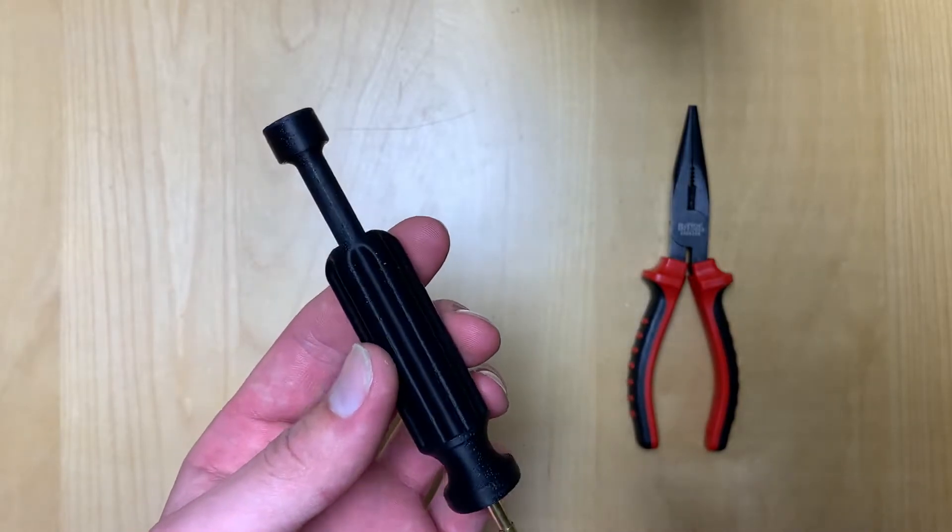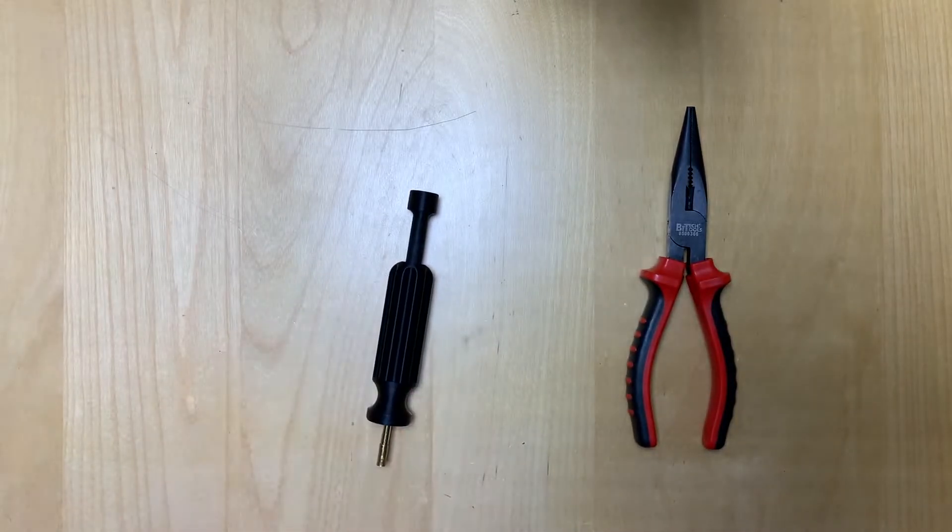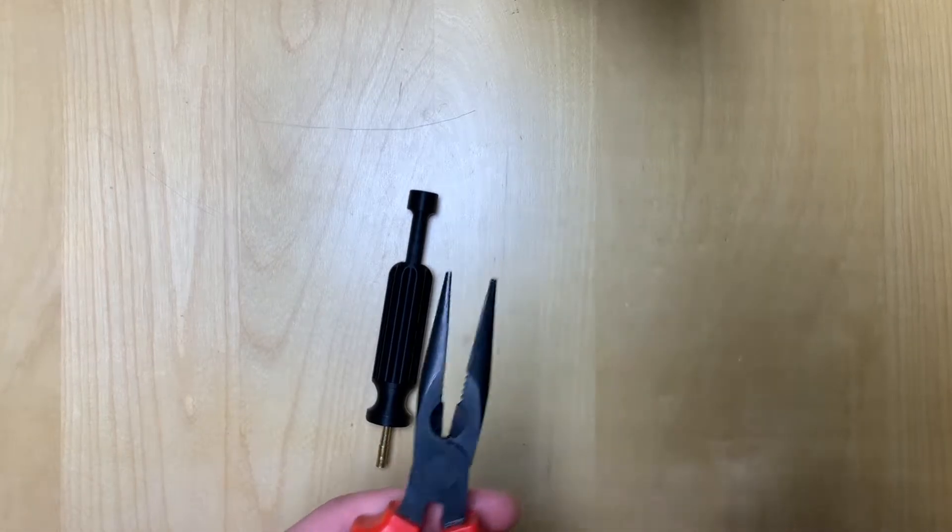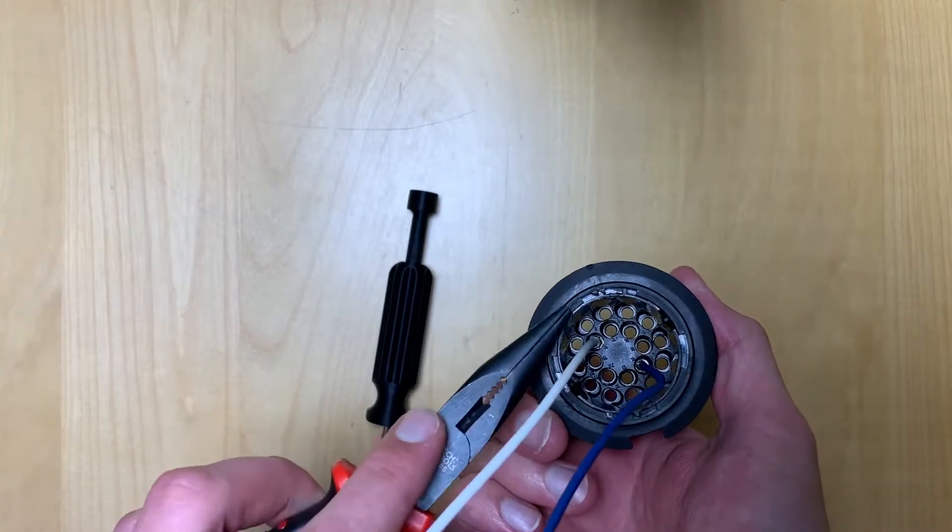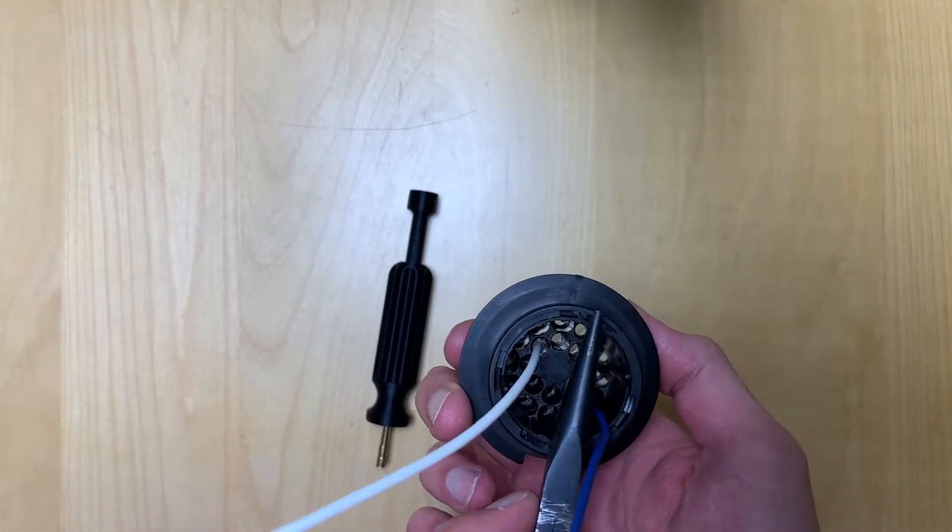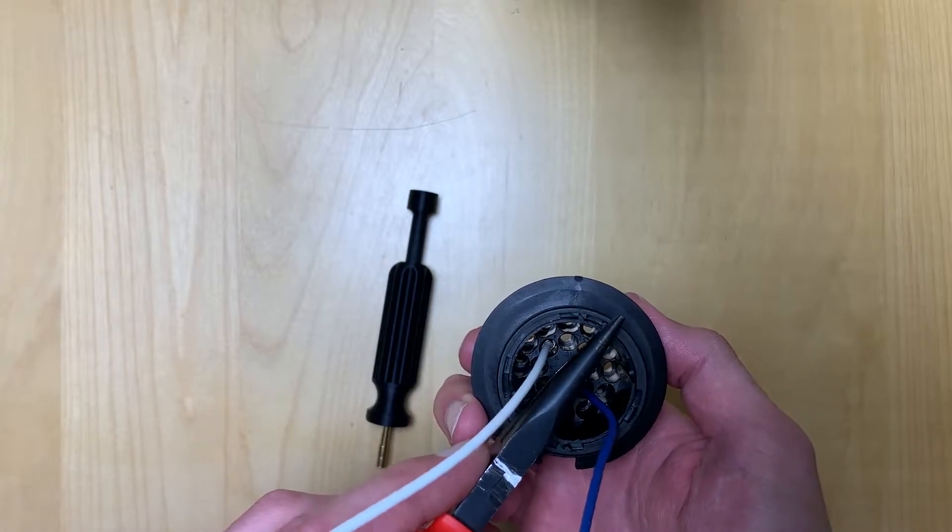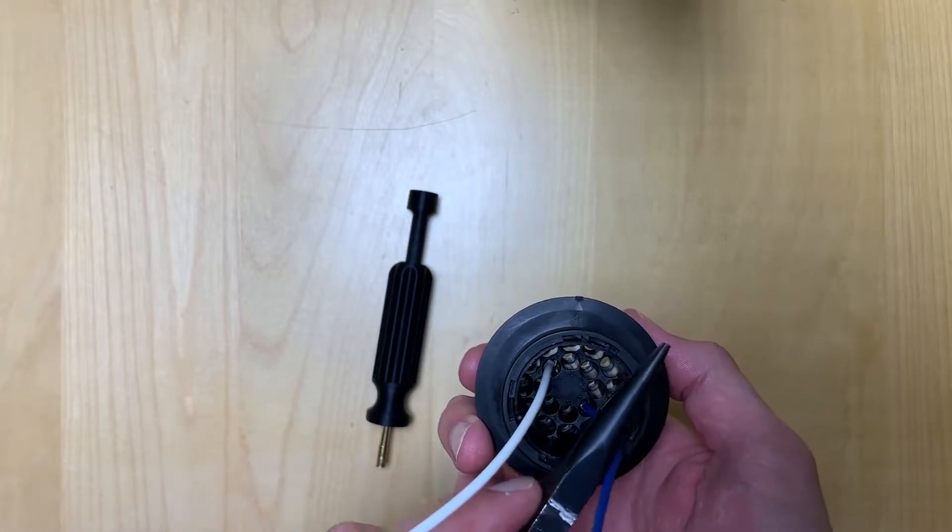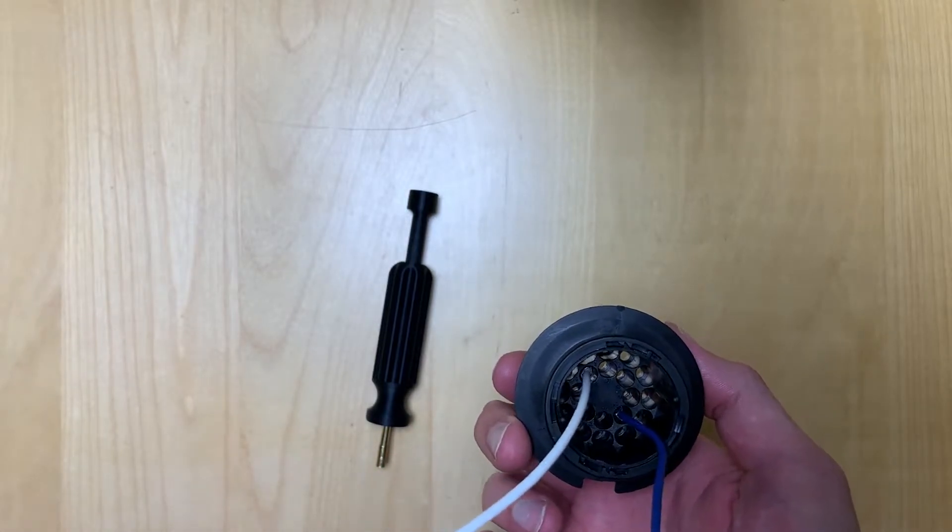You're also going to need a pair of needle nose pliers to unlock the back of your connector. Some people don't know this, but these connectors actually lock. If it's fully clockwise, that means it's locked. To unlock it, you have to go counterclockwise.